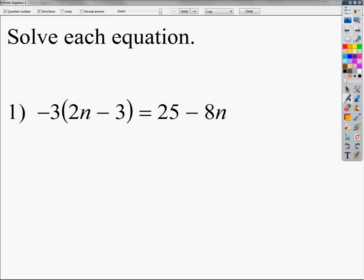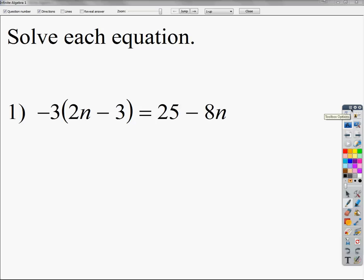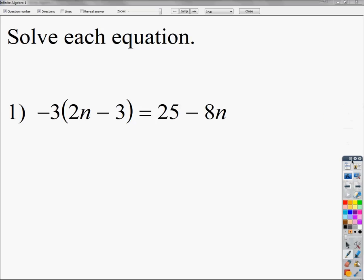Alright, continuing with our series on solving equations, we're going to solve some equations when we have variables on both sides of the equal sign and when there's distributive property. If you have been following along with any of the videos, I'm trying to change this around so I can pick the right pen that I want, but for some reason it's acting really weird on me. The first step, of course, is draw the line.